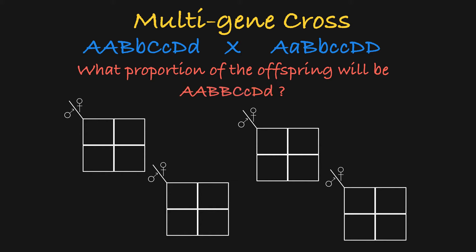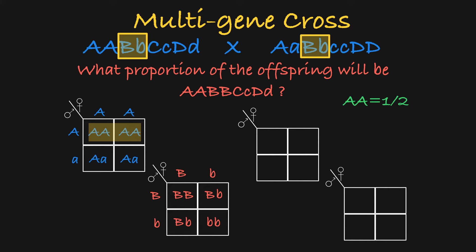For example, if we look at gene A, we can set up a Punnett square and we can see that the probability of these two parents having homozygous dominant offspring is one-half. When we set up the Punnett square for gene B, we see that the probability of the parents having homozygous dominant offspring is one-fourth.